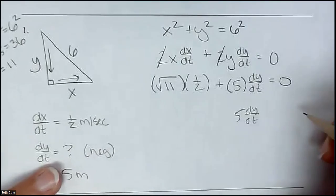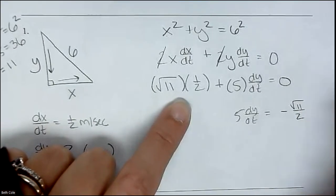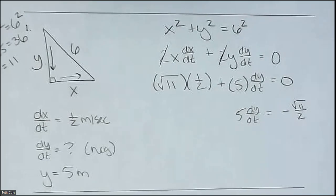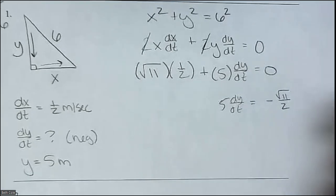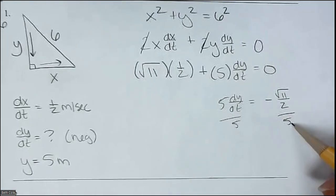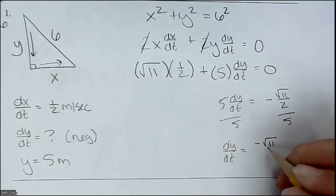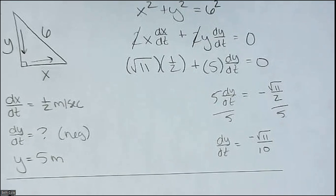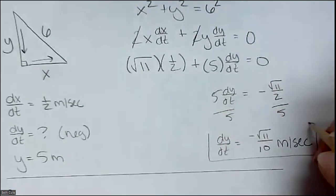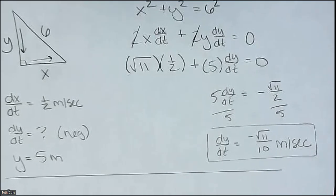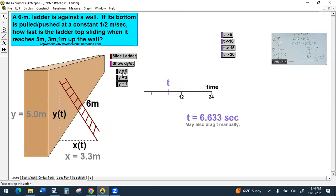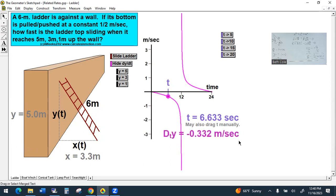X squared plus 25 equals 36, so X squared equals 11, and X is the square root of 11. Now we've got everything plugged in. To get dy/dt by itself, subtract that term over: five dy/dt equals negative square root of 11 over two. Then divide by five, so it is negative square root of 11 over 10 — units: meters per second. That's dy/dt. It is a rate of change, so it needs a per in there: meters per second. If you plug in negative square root of 11 over 10, it gives you that decimal value.